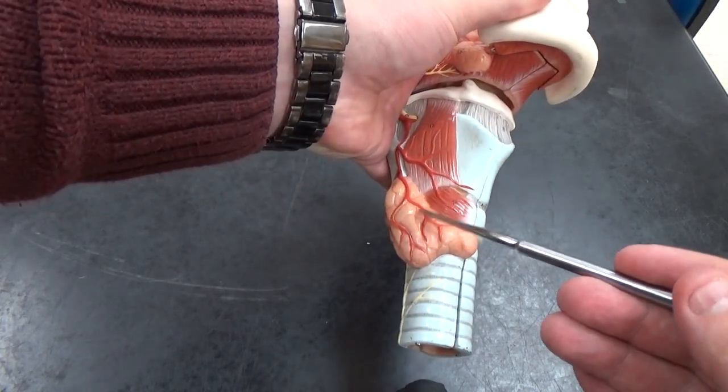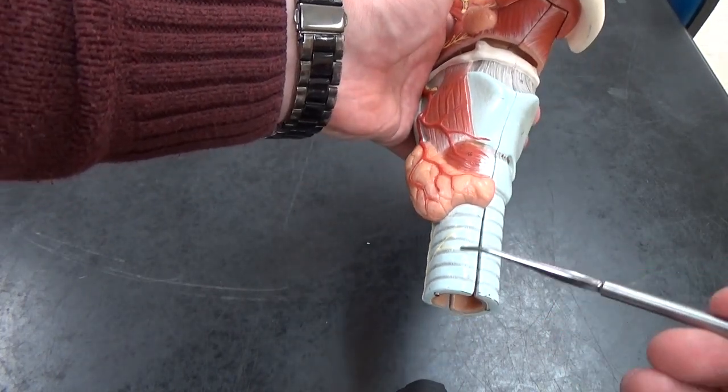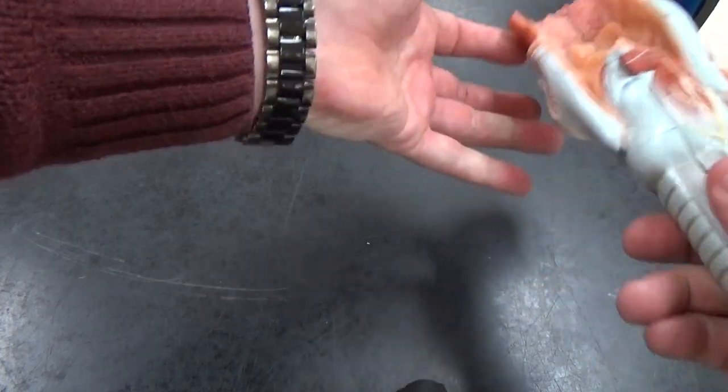The thyroid gland sits here on the side, and then you have the trachea with the tracheal rings. Flip this guy over.